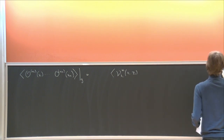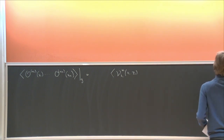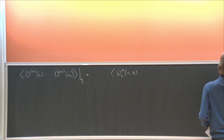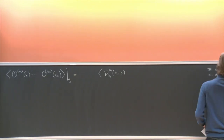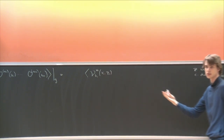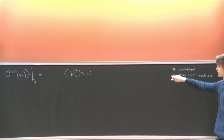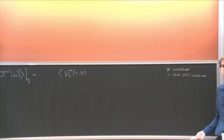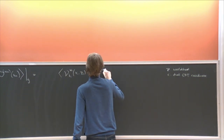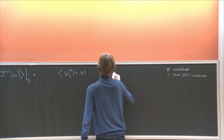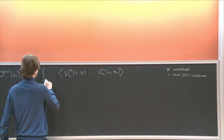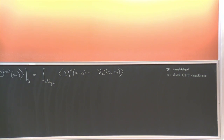So Z will always be the worldsheet coordinate and X will be the dual CFT coordinate. From the worldsheet, X is just an auxiliary coordinate. The worldsheet theory has a global SL(2,R) symmetry, and X transforms under Möbius transformations — that's the meaning of X on the worldsheet. I will have N of them here, and since this is string theory, I should integrate over the moduli space of Riemann surfaces.